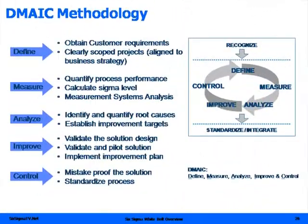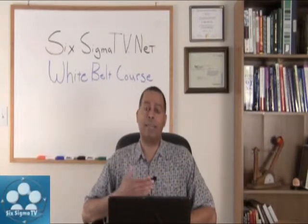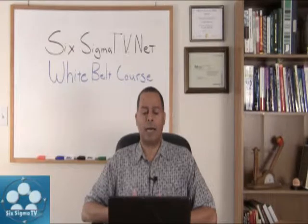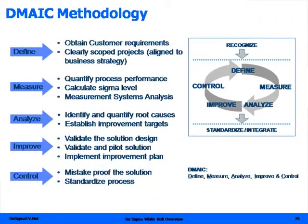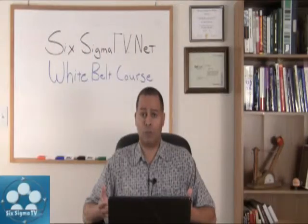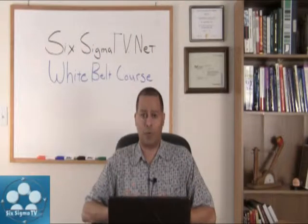In the Improve phase we start redesigning the process. We validate the solutions, pilot those solutions, and make sure they've targeted those root causes and eliminated the reasons for poor process performance. In the Control phase we establish mistake-proofing, do risk assessments, standardize the processes, review cost-benefit analysis, establish controls, and hand everything back to the process owners to sustain those improvements.